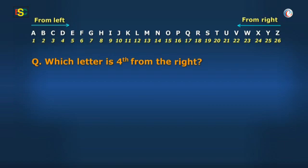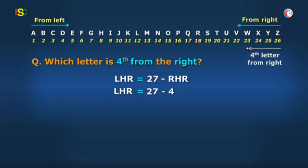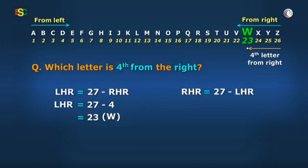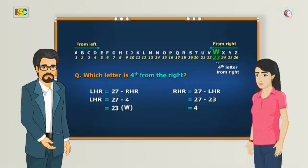And what about the 4th letter from the right? Baba, I remember that sum of left-hand ranks and right-hand ranks is 27. So, left-hand rank of 4th letter from the right is 27 minus 4 equal to 23. And 23rd letter is W. So, W is 27 minus 23 equal to 4th letter from the right.